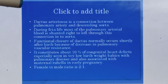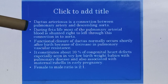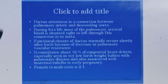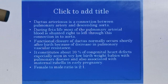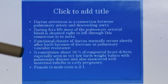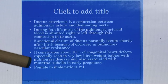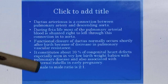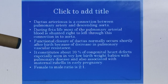This ductus arteriosus becomes the ligamentum arteriosum after birth and closes soon after birth. It becomes a congenital heart defect if it remains patent in some individuals. It is especially seen in very low birth weight infants with pulmonary artery diseases and also associated with maternal rubella infections in early pregnancy. The female to male ratio is 2:1.